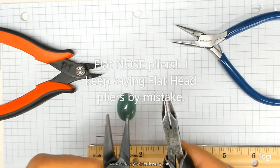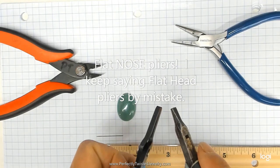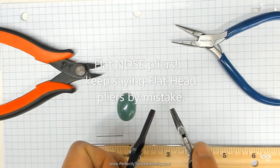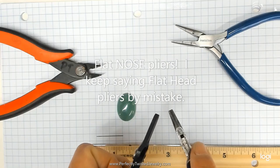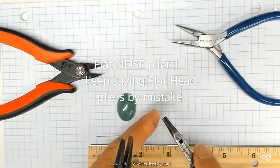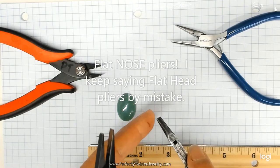To make prongs, it's really nice to get a set of flat head pliers in different diameters so that you can use the end of the plier to help you size the prongs.